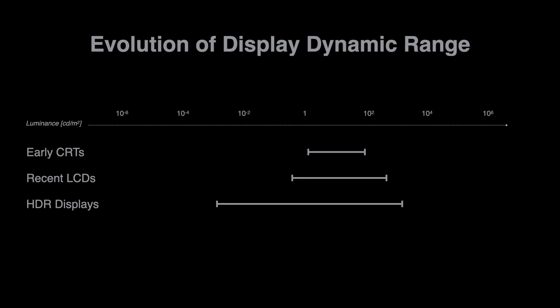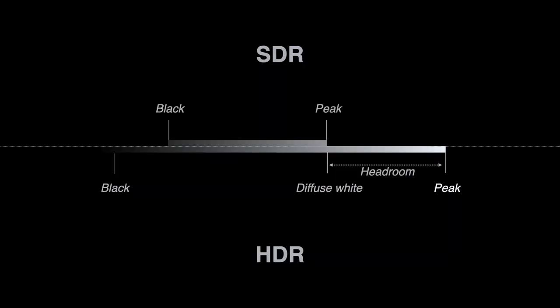iPhone has included OLED displays for over five years, and that's a lot of HDR displays out there. Having displays with range greater than print lets us not just make SDR images brighter, but lets us render parts of the scene into the HDR headroom and separate the diffuse white from the specular highlights or emissive objects.